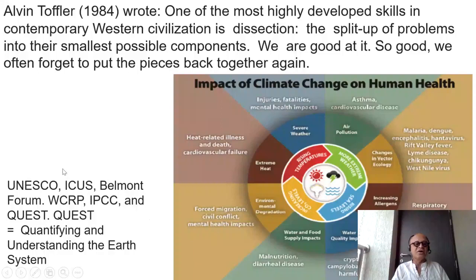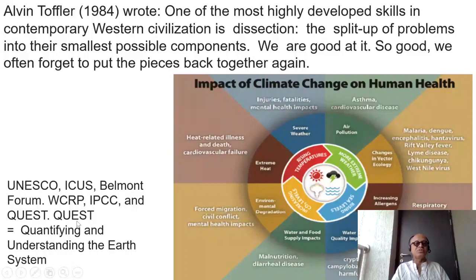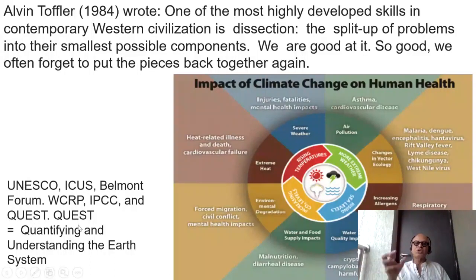There are now many entities working on this: UNESCO, the International Council for the Union of Science (recently renamed from ICSU), the Belmont Forum which funds activities across international boundaries, the World Climate Research Program which manages IPCC — the Intergovernmental Panel on Climate Change — providing assessments every seven years, with the next one due in 2021, and Quest, which produced the book Quantifying and Understanding the Earth System.